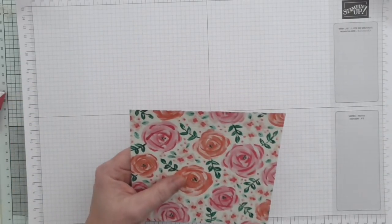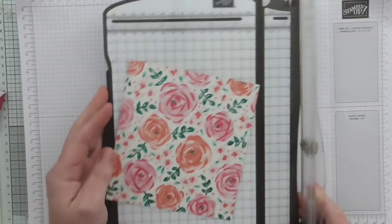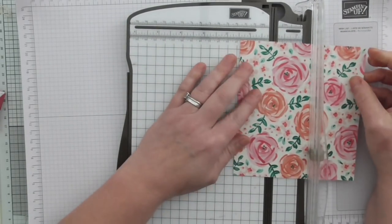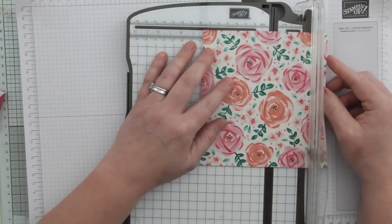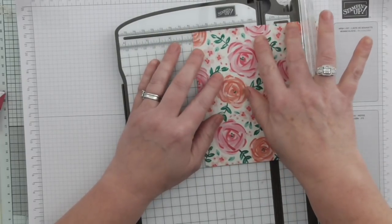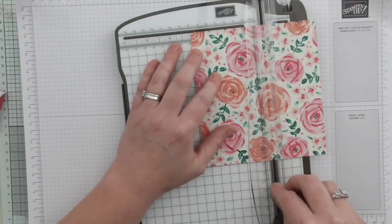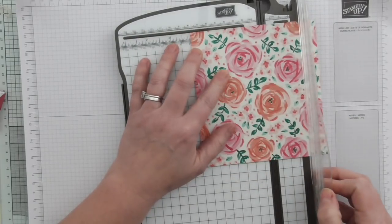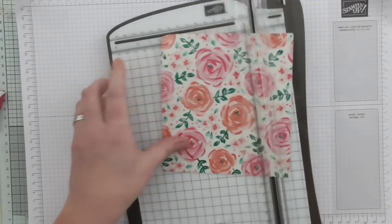So that was 3 quarters of an inch, 1 and 1 eighths, and then I want to do 3 and 1 eighths. 3 and 1 eighths and 3 and a half. Now I can move that, so I'll turn it over and I will fold and burnish those score lines.